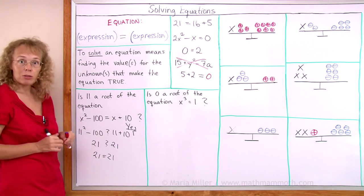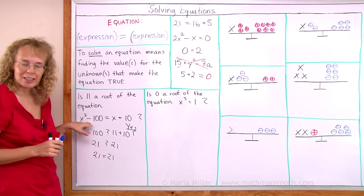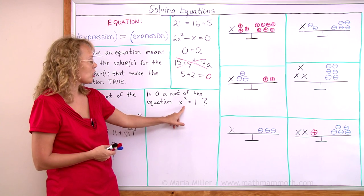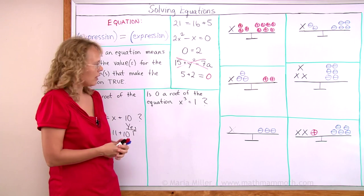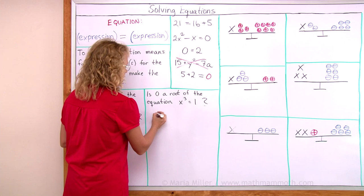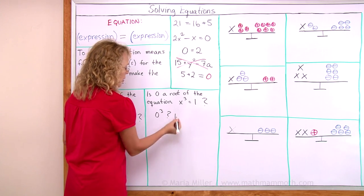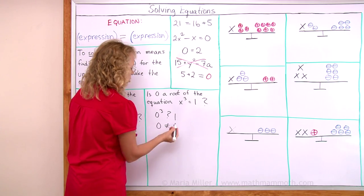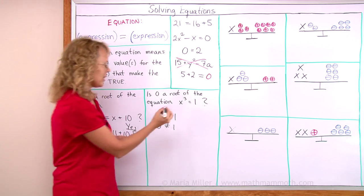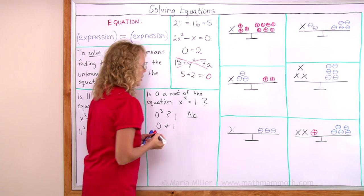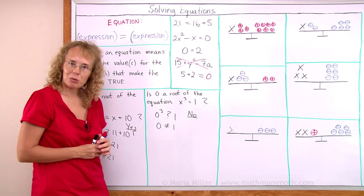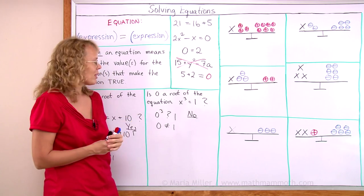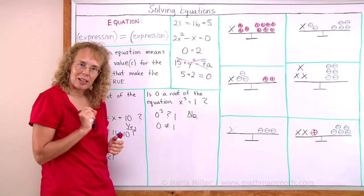Is 0 a root of the equation x cubed equals 1? Again, we do the same thing. We put 0 in place of x and calculate. Are these sides now going to be equal? Clearly not because it's going to be 0 and 1. Those are not equal. So no, it is not. Can you perhaps see a root for this equation? What would x be to make this true? It's a pretty easy number. Actually, x equals 1 will work.